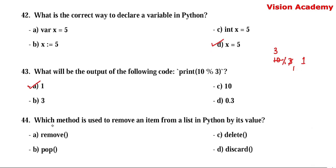Question number 44. Which method is used to remove an item from a list in Python by value? Option A: remove. Option B: pop. Option C: delete. Option D: discard. Here, option A — remove — is the method used to remove an item from a list by its value.